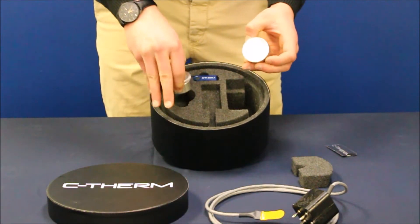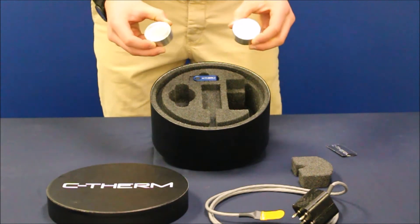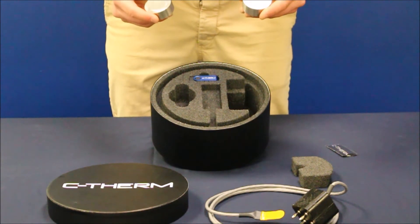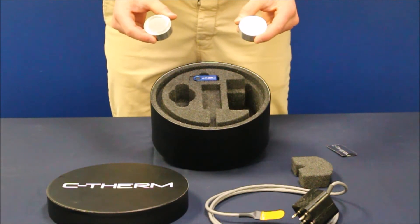Next we have stainless steel 304 reference samples which are included in the kit. These are included as they have a well-characterized thermal conductivity value and are used to validate the sensor's performance.